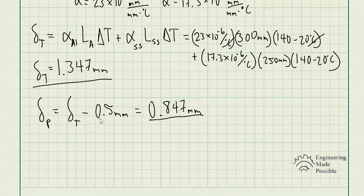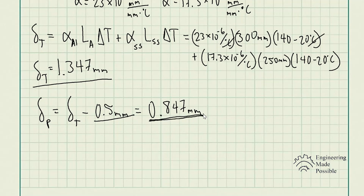From the original lengths to the 0.5 millimeter gap, the rods are expanding freely with no force developed. However, once the expansion exceeds 0.5 millimeters, all additional deformation contributes to the internal force. Once they exceed that gap, they physically cannot expand further, so any additional expansion they would otherwise undergo creates that compressive force in the rods.